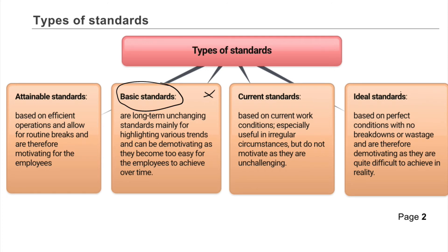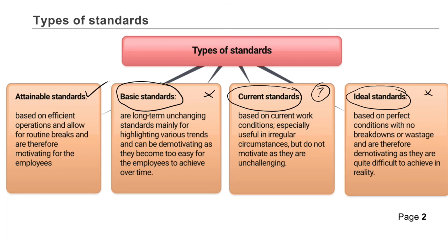We've got ideal standards as well, which assumes perfection — no breaks, no mistakes, everyone going flat out. That will always yield adverse variances because you're trying to achieve perfection, which just isn't possible. And then we've got attainable standards, which are the best ones for building budgets. That's how we're performing now, only a little bit better — building in efficiency improvements and allowing for things like routine breaks, so it's therefore motivating for employees.